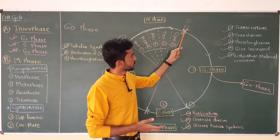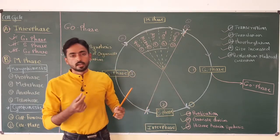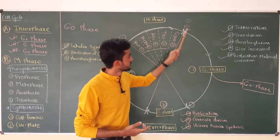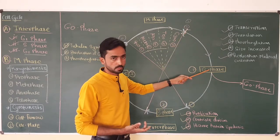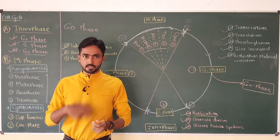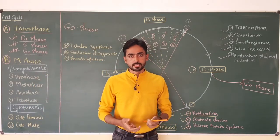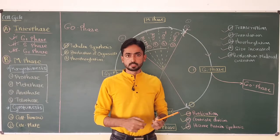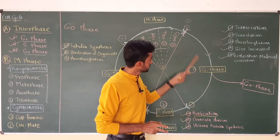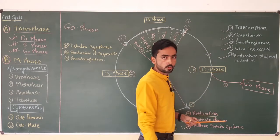Why does a cell not directly enter G0 from M phase? Because when a cell divides in M phase, the newly synthesized daughter cells are very small and not mature. So before entering G0, the daughter cell should get mature, which happens during the G1 phase. After maturation, the cell is ready to enter G0. In G0, the cell may become a permanent cell and perform specific functions. For example, human neurons enter G0 and perform specific functions throughout life. This entry from G1 to G0 is called differentiation.